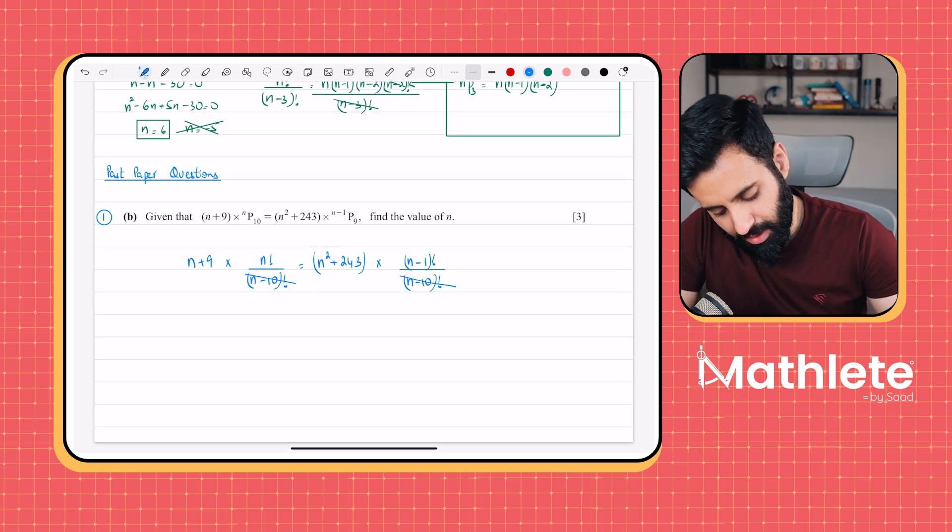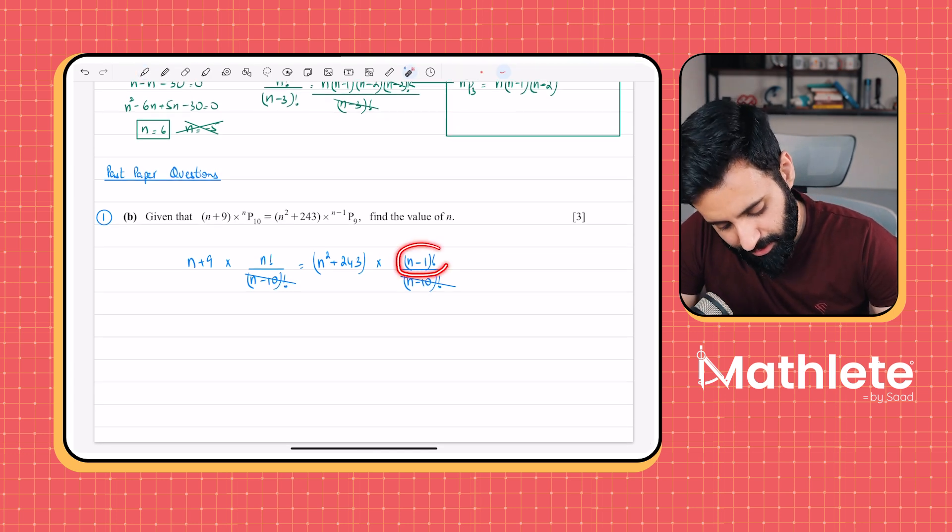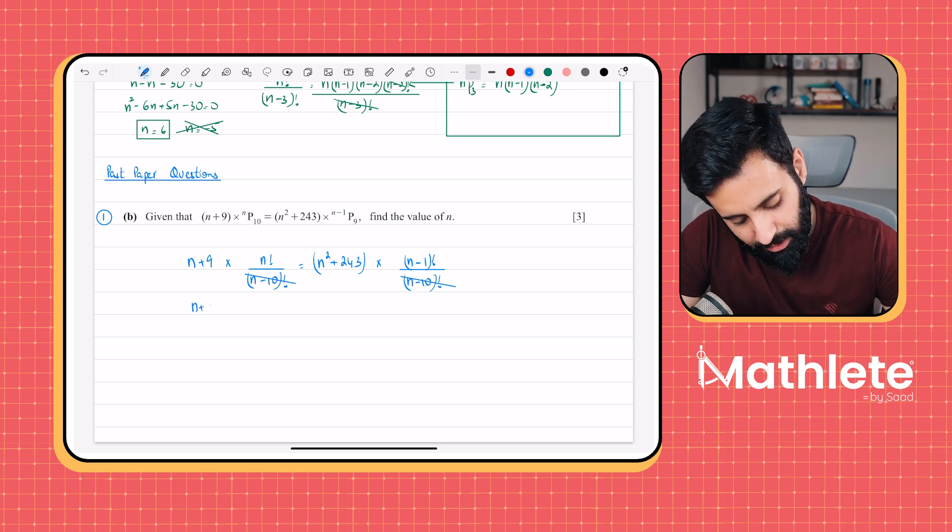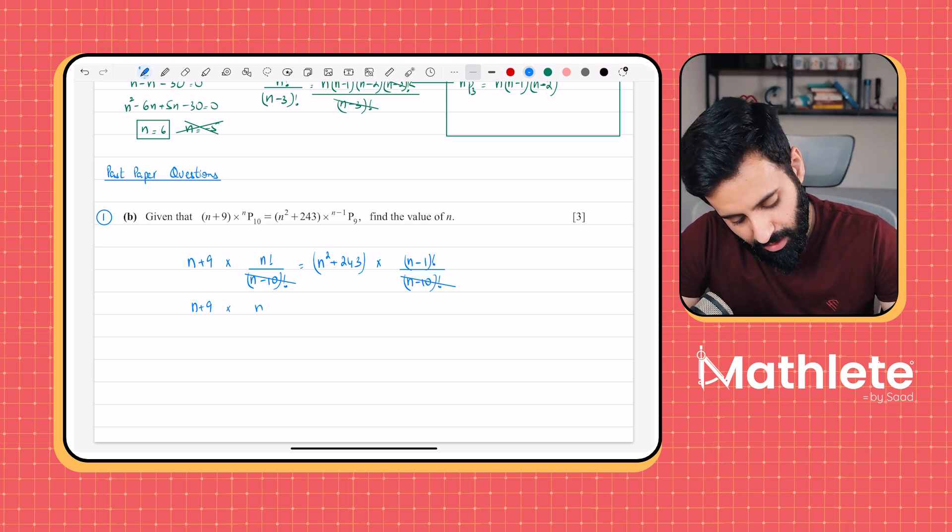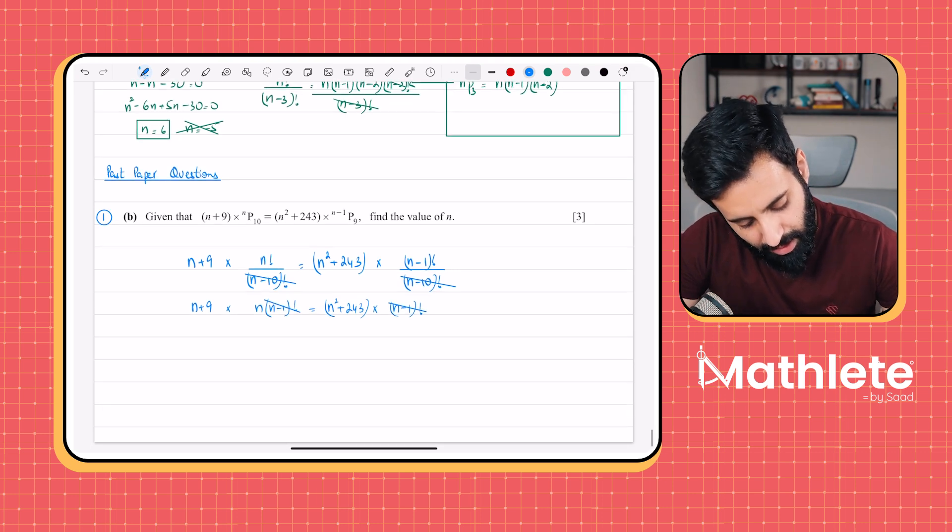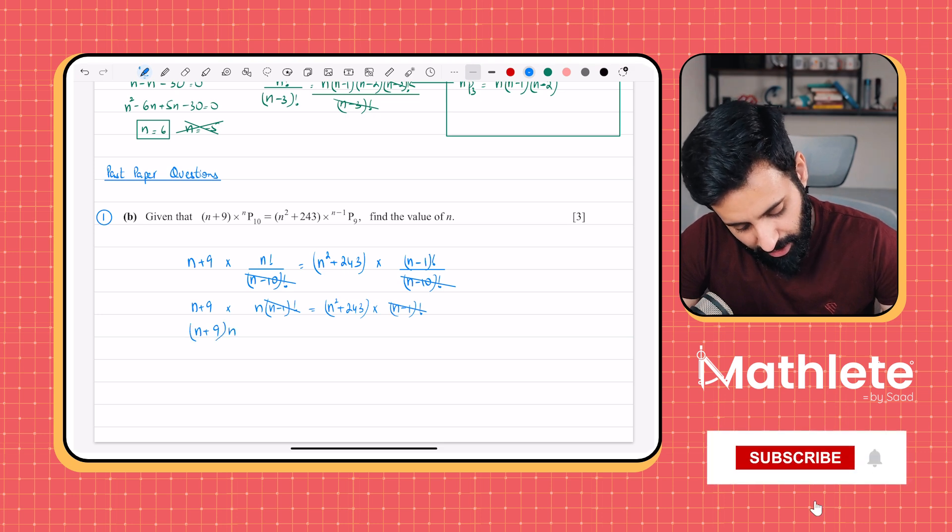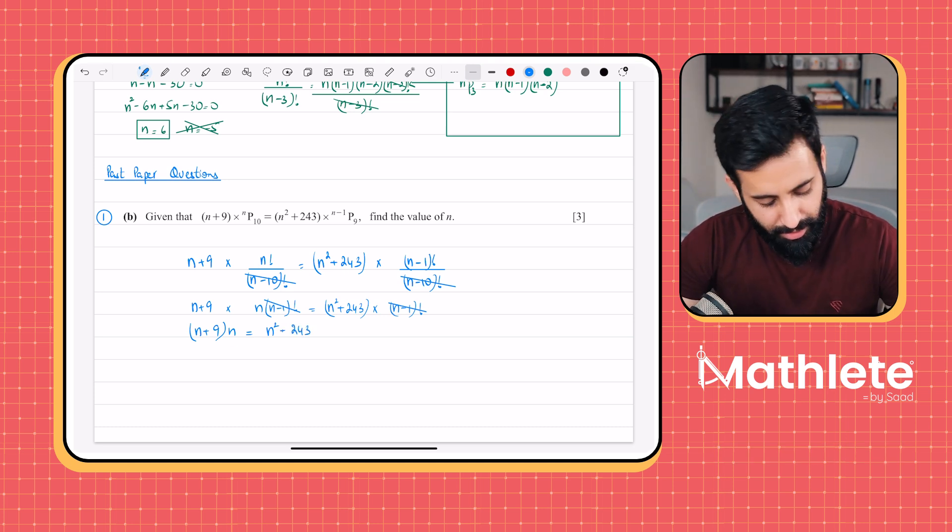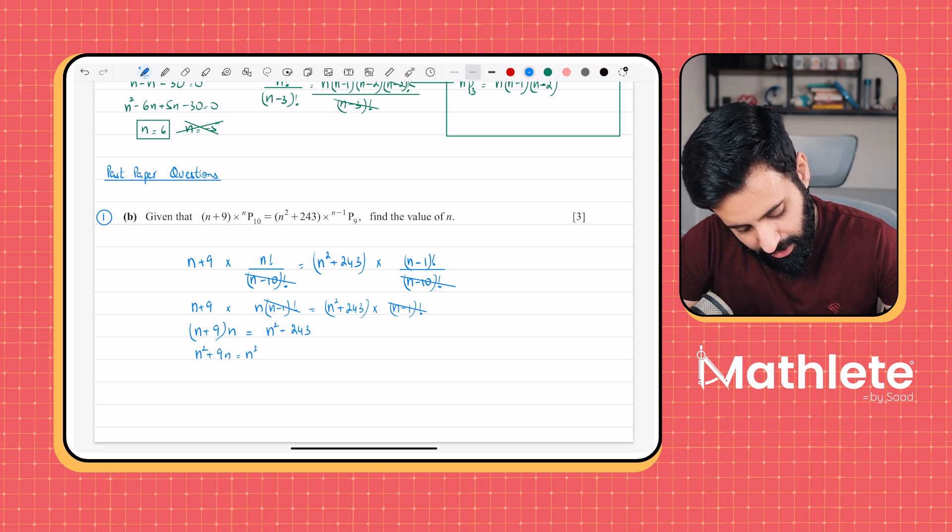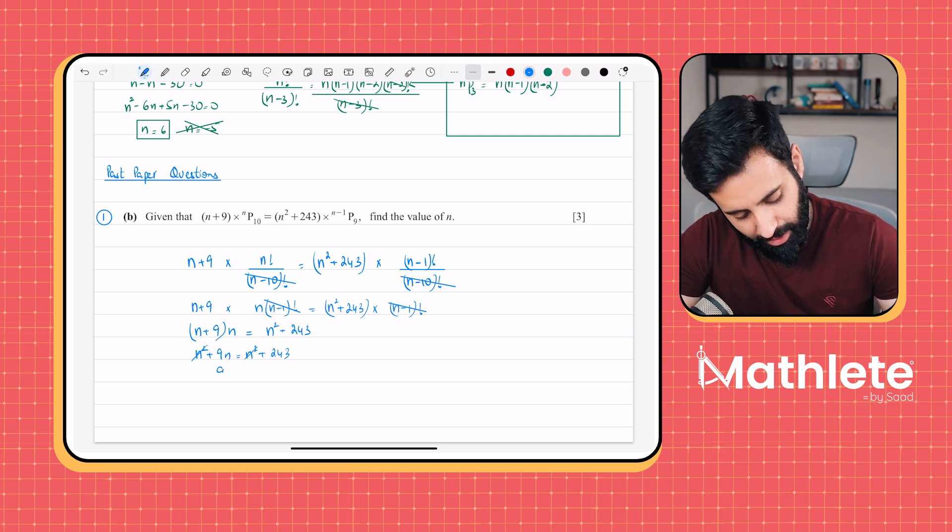So immediately, we can see N minus 10 factorial and N minus 10 factorial getting cancelled. Now we have a factorial on the right hand side, and we have a factorial on the left hand side. So we need to get rid of that also. We can introduce N minus 1 factorial in N factorial. So we let N plus 9 be as it is. N factorial, we rewrite as N into N minus 1 factorial. So N minus 1 factorial and N minus 1 factorial cancels. And now we have N plus 9 which is being multiplied by N is equal to N square plus 243. And if we start expanding, we have N square plus 9N equals N square plus 243. So it's not a quadratic equation anymore, because N square cancels. 9N equals 243.